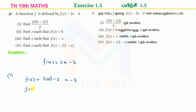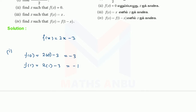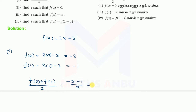f of 1 is equal to 2 into 1 minus 3, so 2 minus 3 is equal to minus 1. Therefore, f of 0 plus f of 1 divided by 2 is equal to minus 3 plus minus 1, divided by 2, which is minus 4 by 2, so minus 2 is the answer.